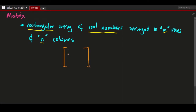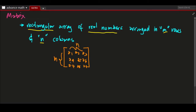For example, we have here a matrix: A1, A2, A3, A4, A5, A6, A7, A8, A9. So this is a 3 by 3 matrix. We have 3 rows and 3 columns. The nomenclature of a matrix is M by N, where M and N represent the number of rows and columns respectively.